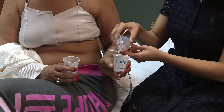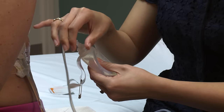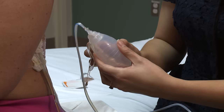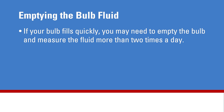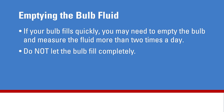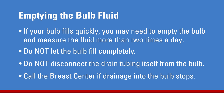At least two times a day after stripping the drain, empty the fluid from each bulb into a separate measuring cup. Unplug the stopper from the emptying port at the top of the bulb, then tip the bulb upside down over the measuring cup and gently squeeze all of the fluid out. Your nurse will provide measuring cups. If your bulb is small and fills quickly, you may need to empty it more than twice a day — do not let it completely fill, as this will stop fluid from flowing in. Do not disconnect the drain tubing from the bulb. If drainage into the bulb stops, call the breast center.